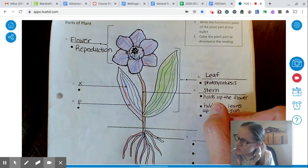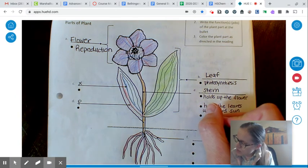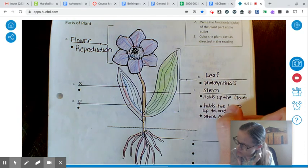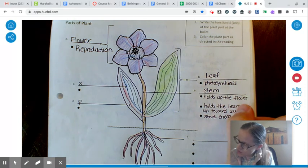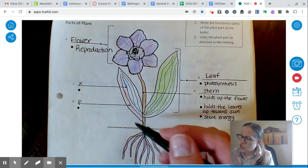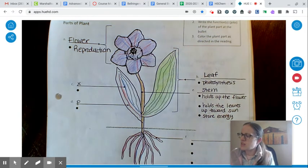And leaves or stems can also store energy. If you think about a stem that you eat like celery, celery, that's a stem. So the plant has taken sugar and stored a lot of it inside that stem.